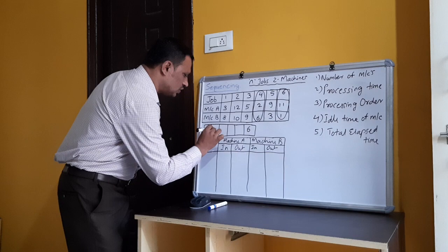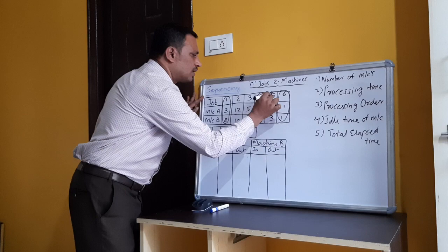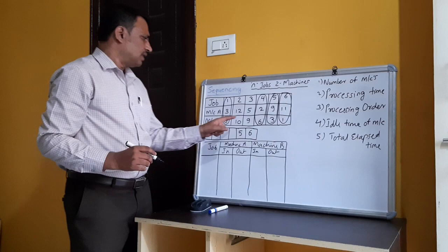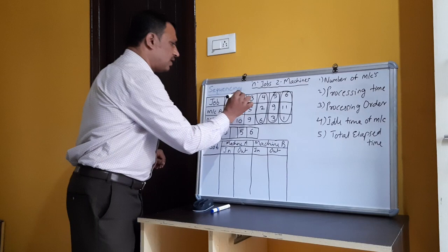So for machine A we write job one towards the left side, and for machine B we write job five towards the right side. Both are marked as placed. Next, the least remaining processing time is 5, on machine A for job three, so we write job three after job one on the left side. Finally, job two is the only remaining job and is placed in the middle.